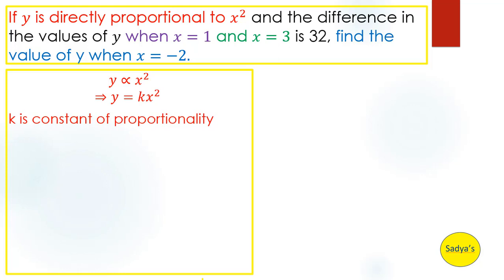Where k is the constant of proportionality. Our main aim is to find the value of k. Now let's move to the third information, written in purple: when x is equal to 1. We substitute x = 1 into y = kx squared, giving y = k times 1 squared, which simplifies to y = k. So the value of y when x = 1 is k.